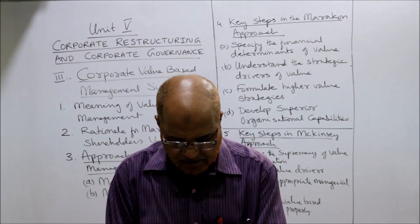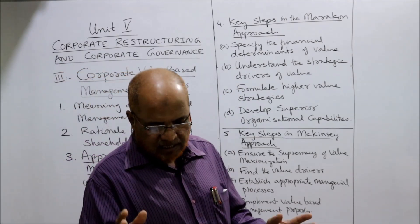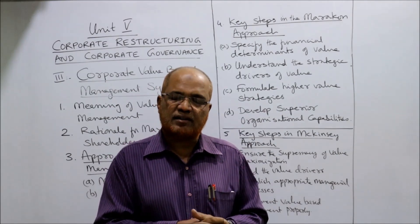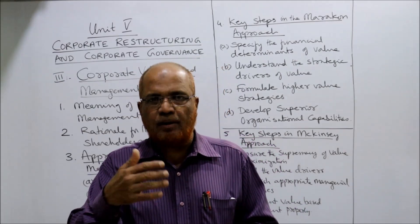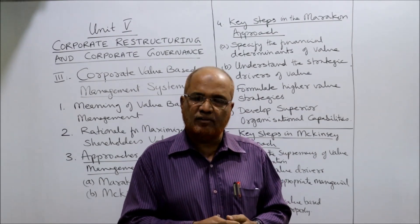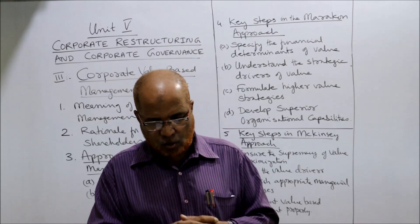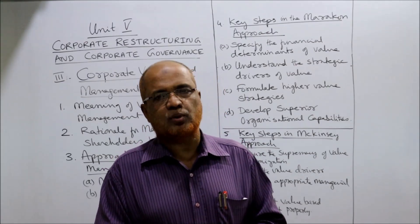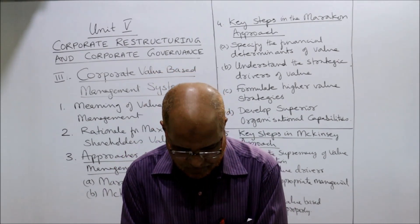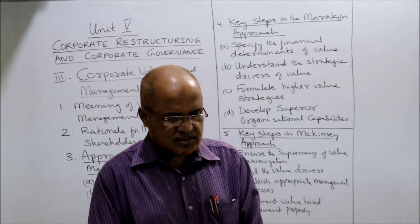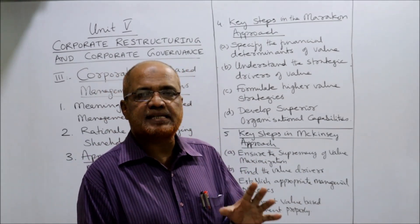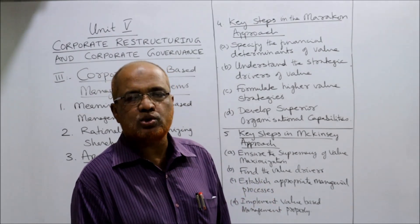The key steps in the Marakon approach are: first, specify the financial determinants; second, understand the specific strategic drivers of value. The key financial determinants are the spread — that is, return on equity versus cost of capital — and the growth rate of dividends. The two primary determinants are spread and growth. Finally, formulate higher-value strategies and develop superior organizational capabilities to increase value to shareholders.